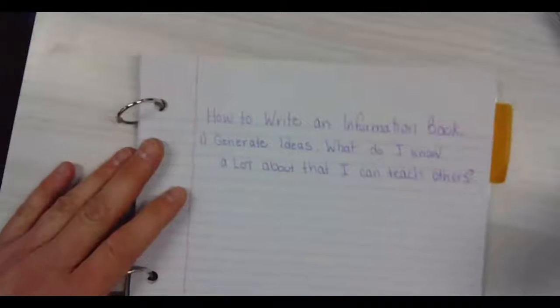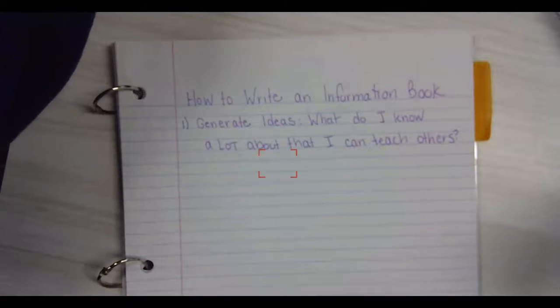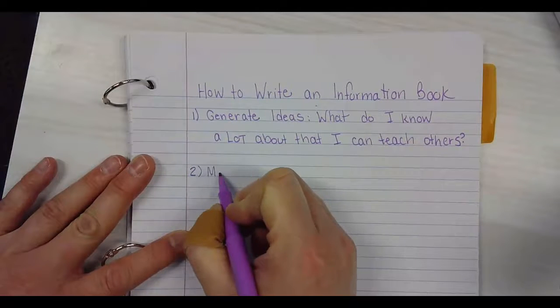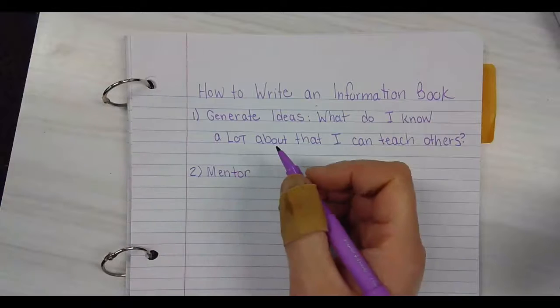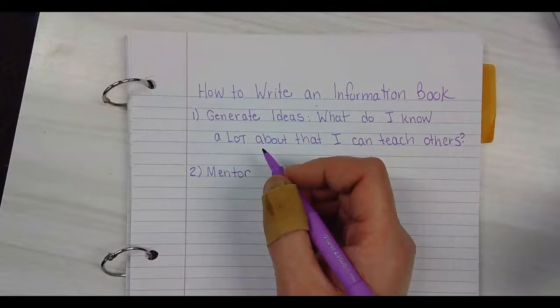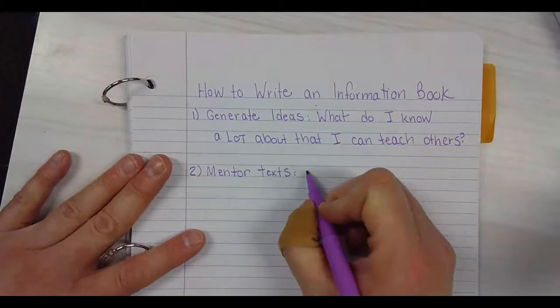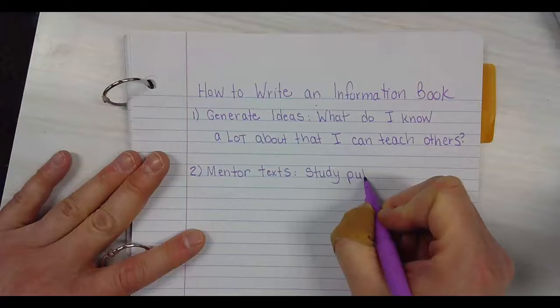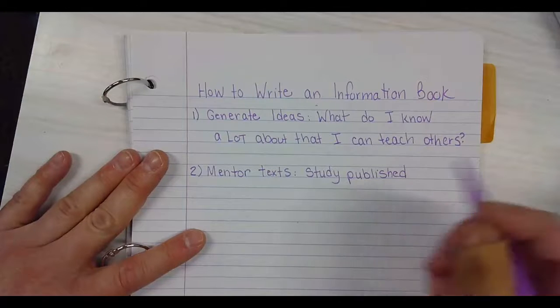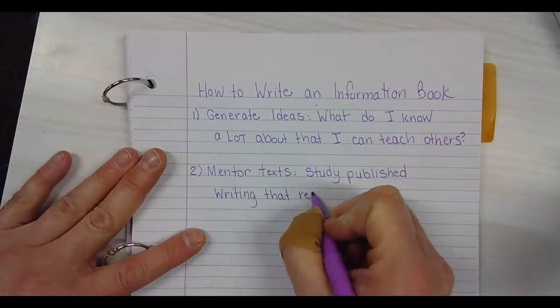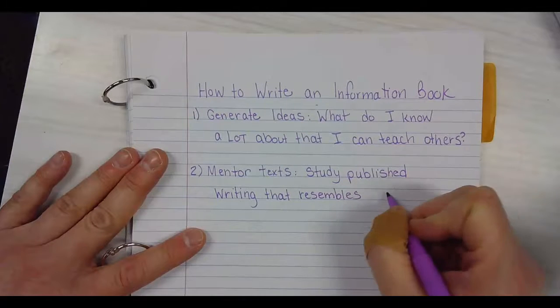I'm going to go back to my chart that I started a little bit ago. It says how to write an informational book. First, we're going to generate ideas. What do I know a lot about that I can teach others? The next thing we're going to think about is mentor texts. Mentor texts are the texts that you would look at to know how to do your job better. So you're going to study published writing that resembles what I want to write.